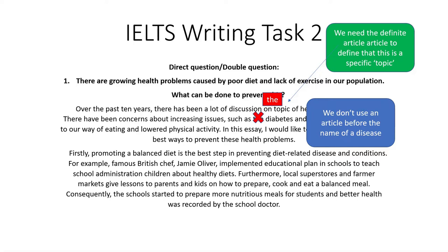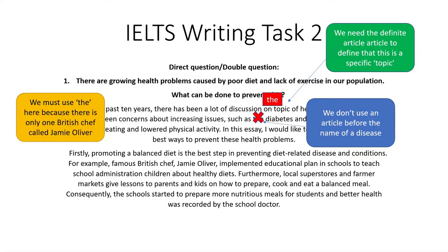Let's move on to the second paragraph: 'Firstly, promoting a balanced diet is the best step in preventing diet-related disease and conditions. For example, famous British chef Jamie Oliver implemented educational plan in schools to teach school children about healthy diets.' What's missing? We need an article before 'famous British chef' because we're referring to a specific person — it should be THE famous British chef. Later in the sentence, 'implemented AN educational plan' because 'plan' is a countable noun.